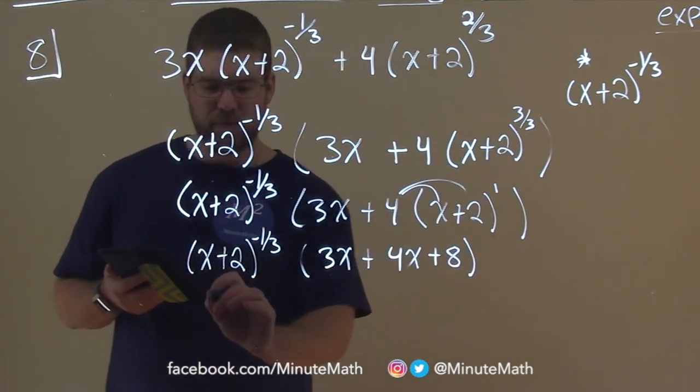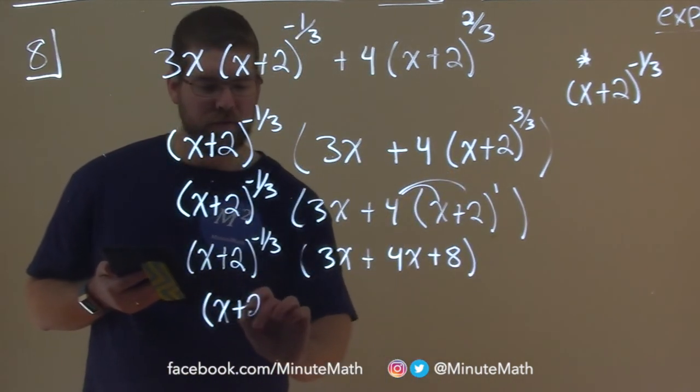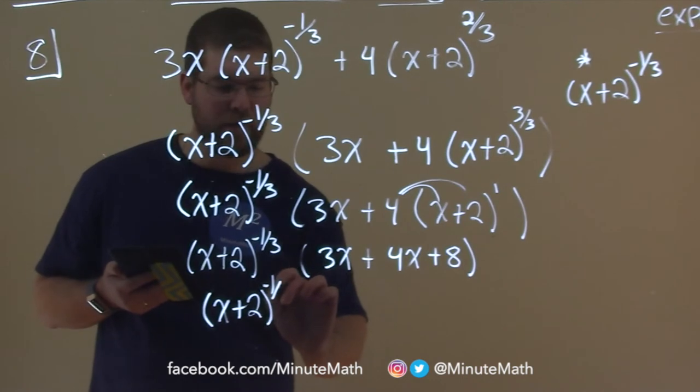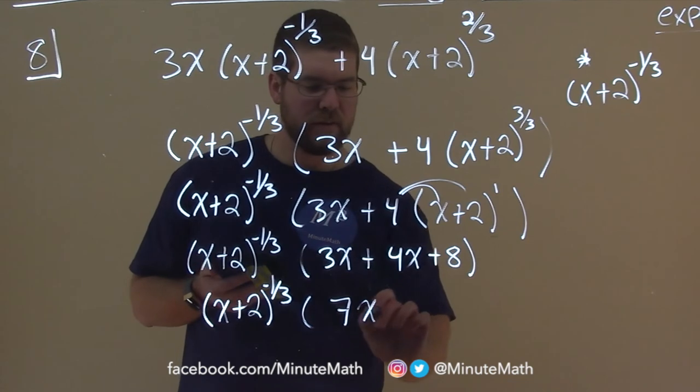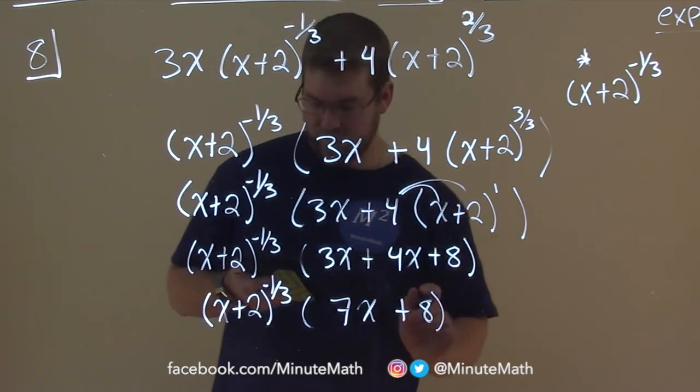Now let's simplify that. So again, we'll bring down the (x+2) to the negative 1/3 power. And then 3x plus 4x is 7x plus 8. And there we go.